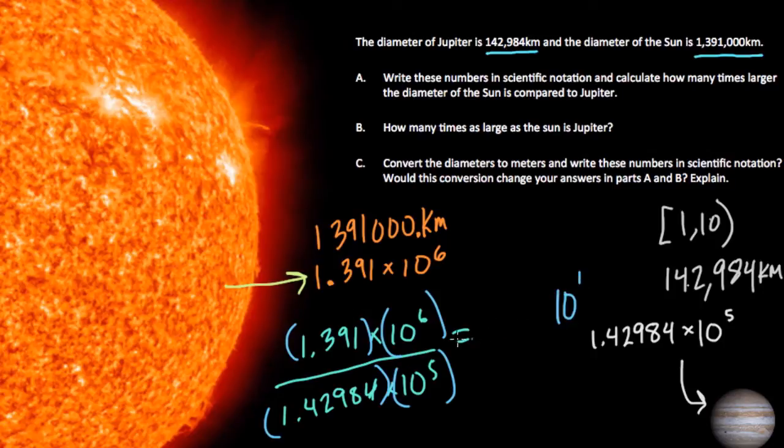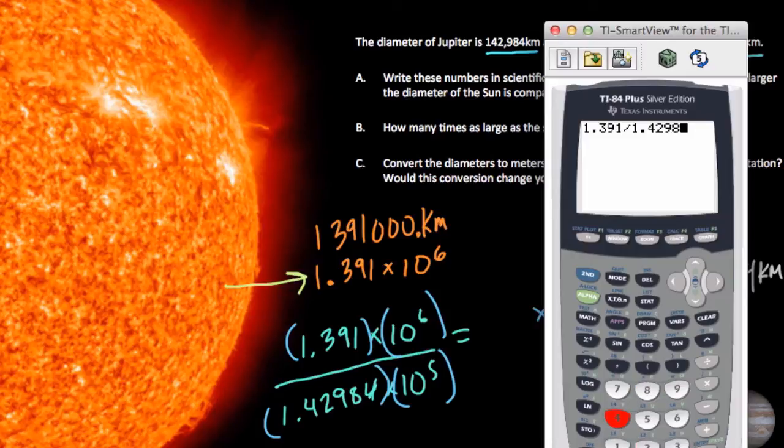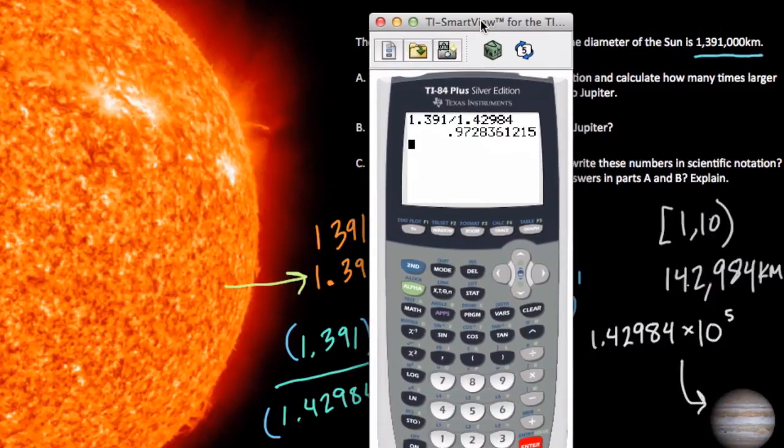We'll start with the powers of 10. That's nice and easy. 10 to the sixth divided by 10 to the fifth is just 10 to the first. Remember, the laws of exponents tells us if you're dividing two numbers with the same base, in this case 10, you could just subtract the exponents. And we're going to multiply this by, well, let's break up the calculator for this. 1.391 divided by 1.42984, and we get 0.9728361215.